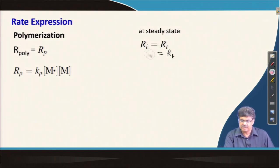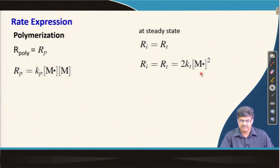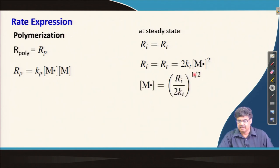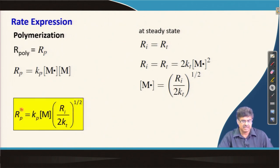We consider R_i = R_T = 2K_T[M·]². From this expression we can get the total radical concentration [M·], and we can place this into the rate of propagation expression to get the rate of polymerization. This is a very useful expression that we will use frequently in the coming lectures.